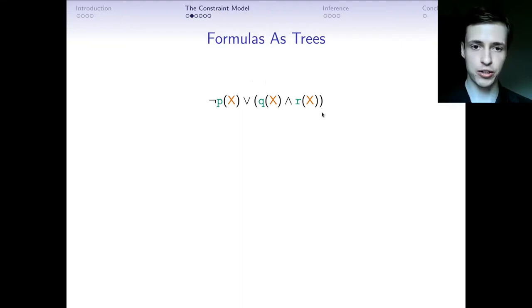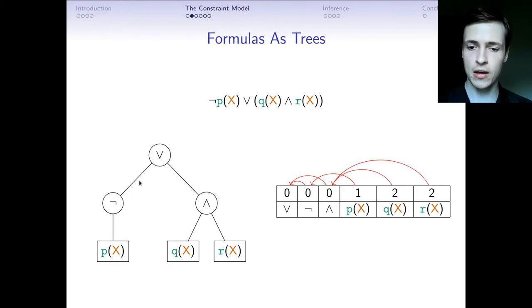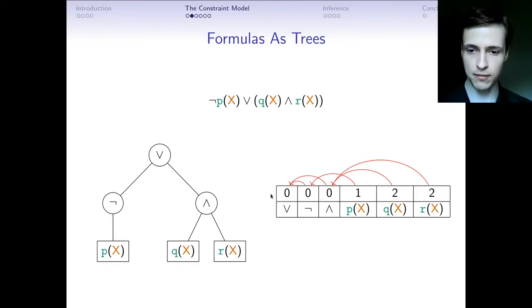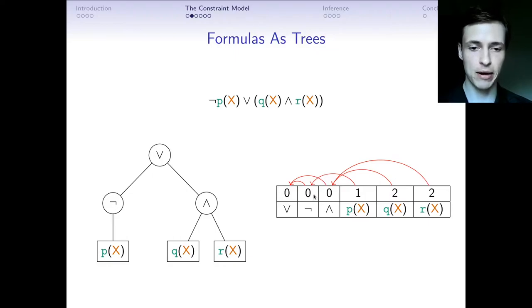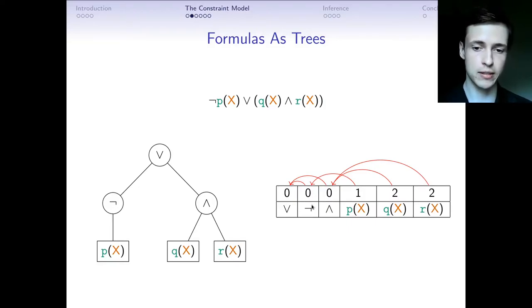An arbitrary formula can be represented as a table with two rows, where the second row lists the values of each node and the first row encodes the parent relationship — each cell holds the index of the parent node. For example, the disjunction node is its own parent, and is also the parent of the negation and conjunction nodes, while the parent of p(x) is at index 1, the negation node.